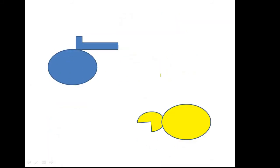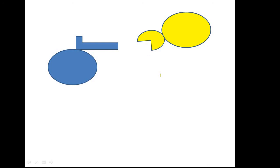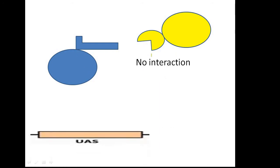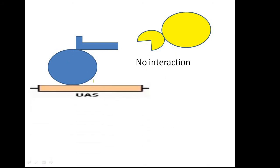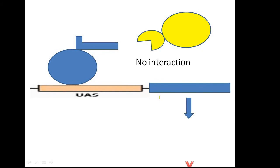In the case where these two proteins are not interacting, although the DNA binding domain will bind to the upstream activator sequence, because the domains are not in close proximity the transcription machinery will not get recruited, and as a result there will be no transcription.